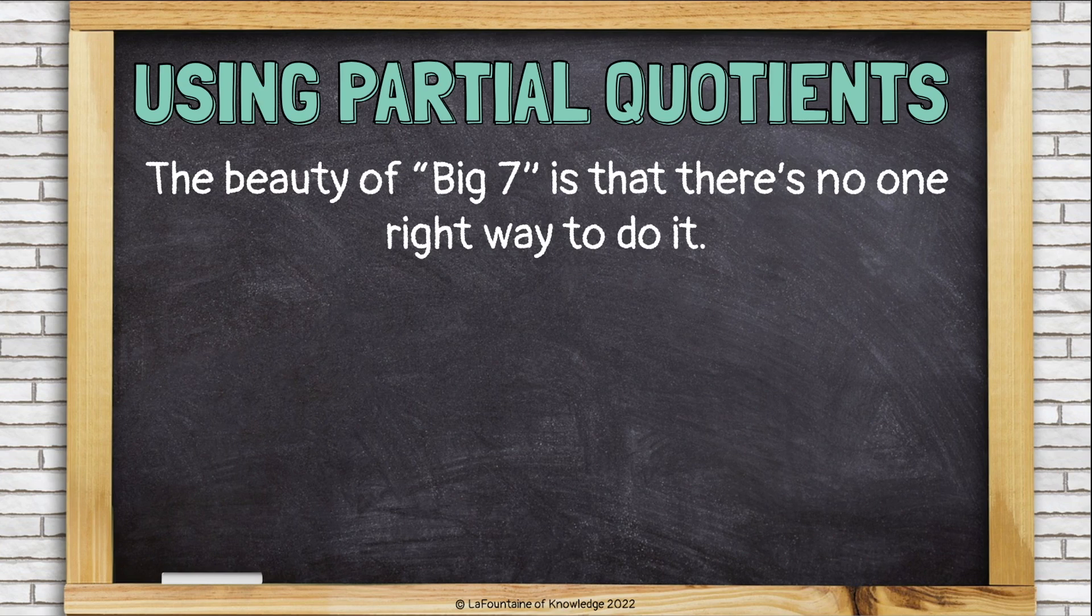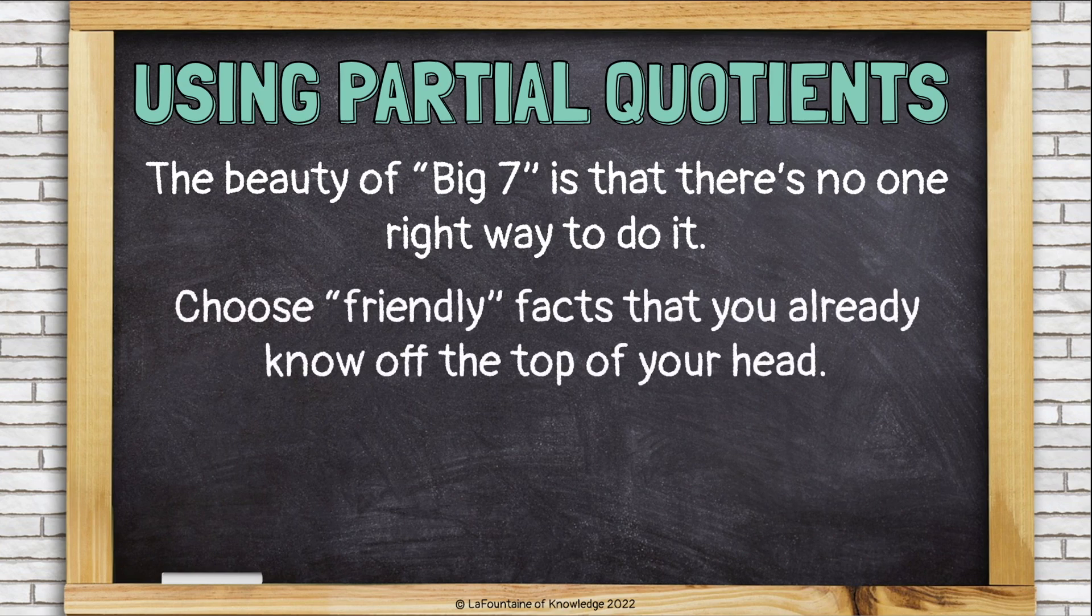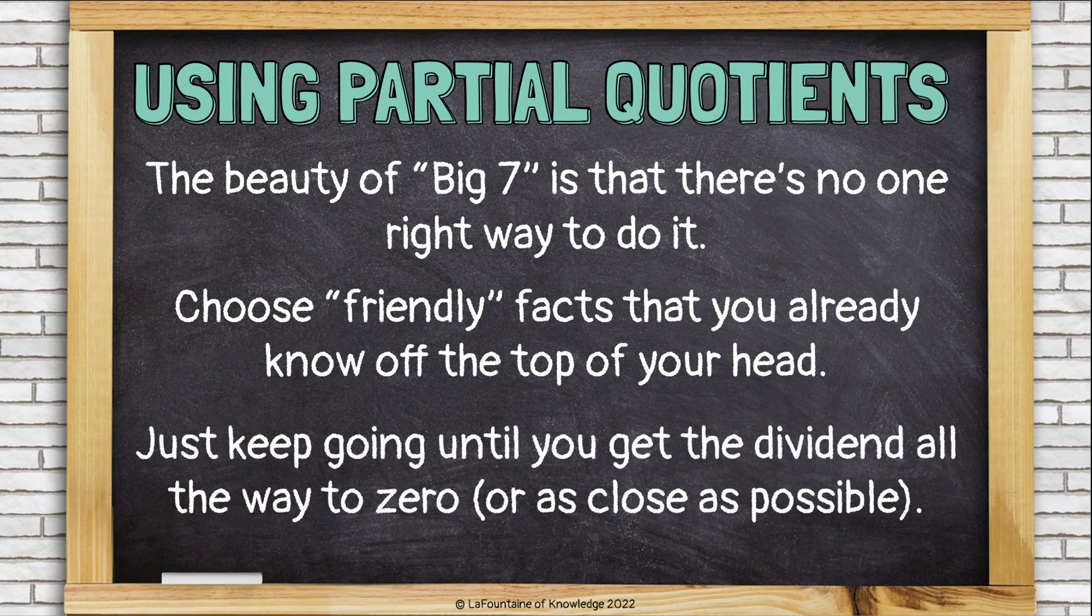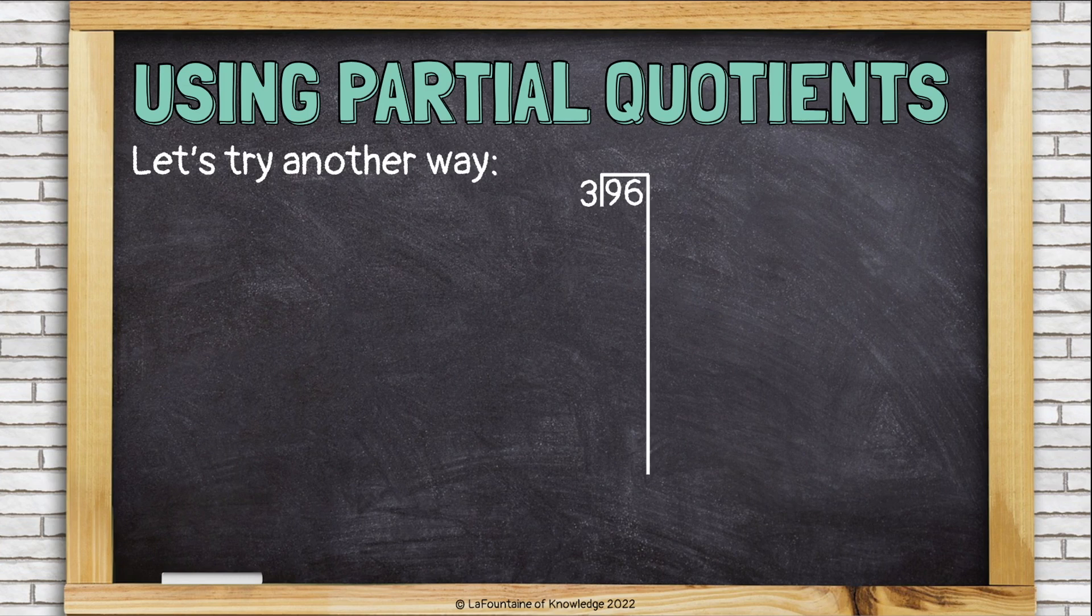The beauty of big 7 is that there's no one right way to do it. Choose friendly facts that you already know off the top of your head, and just keep going until you get the dividend all the way to 0 or as close as possible. Let's try another way, because there's not just one way to solve this. We can solve this in lots of different ways.